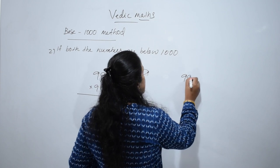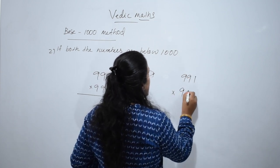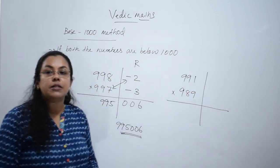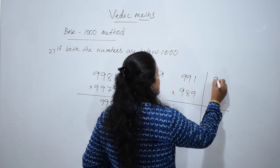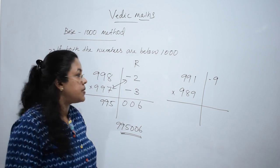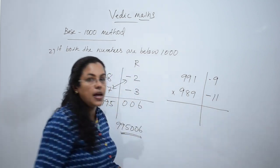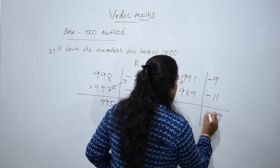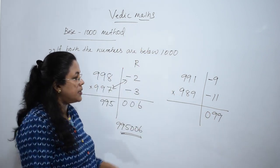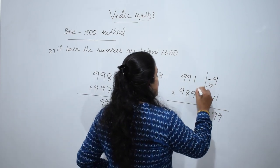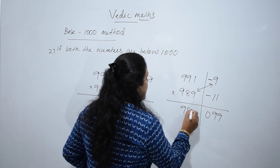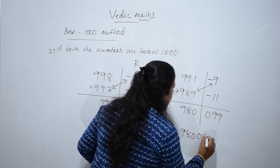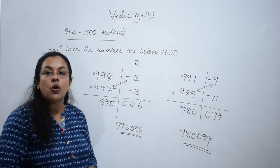One more question: 991 into 989. 991 is 9 less than 1000 and 989 is 11 less than 1000. Multiply the two: minus 11 into minus 9 is 99. Put 0 because of base 1000 method. Now add diagonally: 989 minus 9 is 980. So the answer is 980099. Hope it is clear to you.